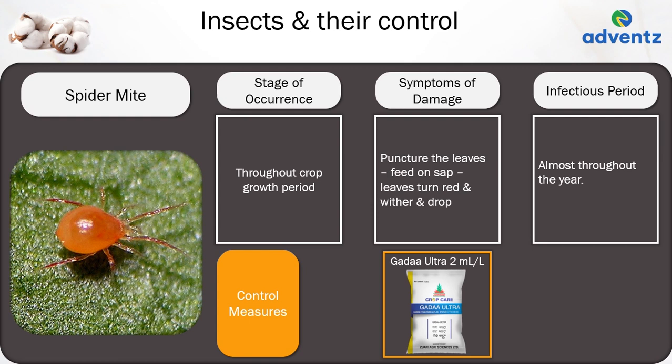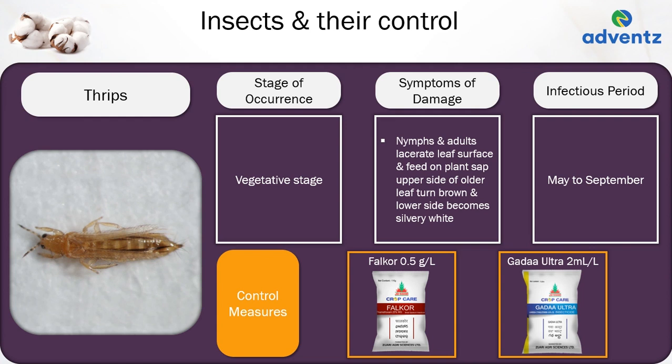The next insect is thrips. Thrips occur in the vegetative stage. The symptoms of damage are nymphs and adults lacerate the leaf surface and feed on plant sap; the upper side of older leaves turns brown and the lower side becomes silvery white. The infectious period of thrips is between May and September. Control: apply Jai Kisan Falkar at 0.5 grams per litre, or Jai Kisan Gadda Ultra at 2 ml per litre.